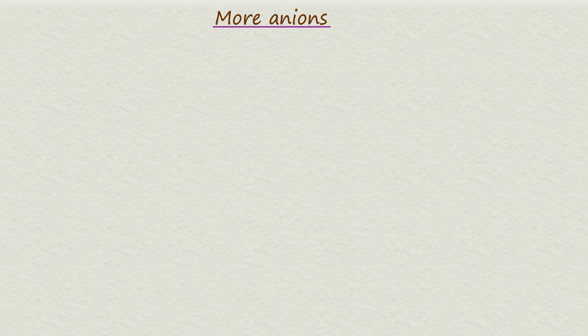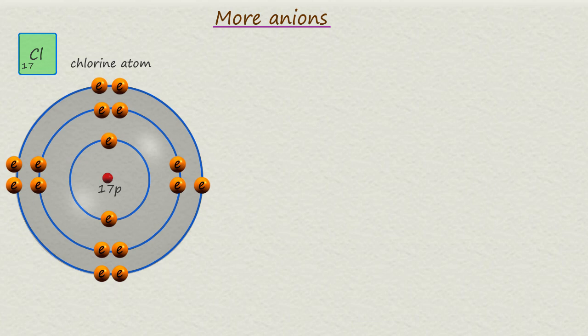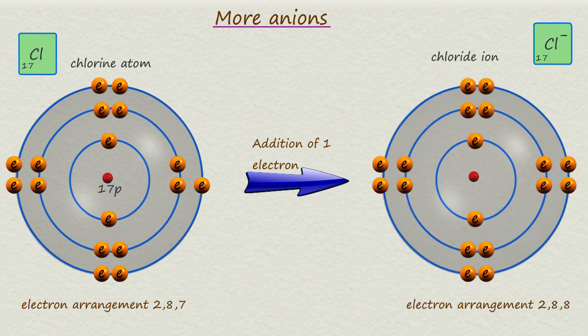Group six non-metals gain two electrons when they react to fill their outer shells. For a group seven element, consider the halogen chlorine, which has an atomic number of 17, meaning 17 protons in its nucleus and 17 electrons in its shells with an electron arrangement of 2-8-7. Chlorine only needs to gain one more electron to fill its outer shell, and so it forms a chloride ion with a minus one charge.